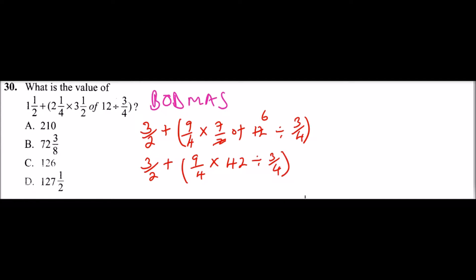We divide 42 by 3/4. Our expression will be 3/2 plus (9/4 × 42 × 4/3). Now that all we have is multiplication inside the bracket, we can simplify.